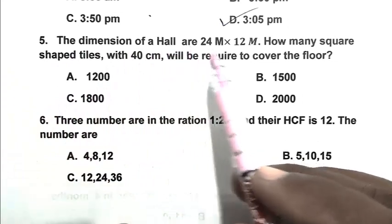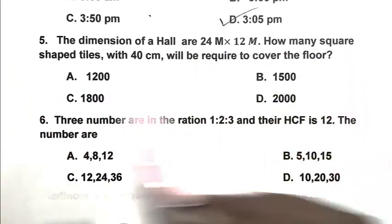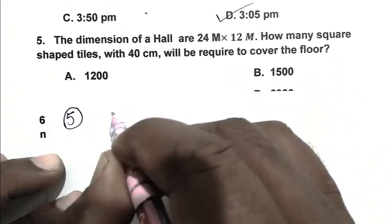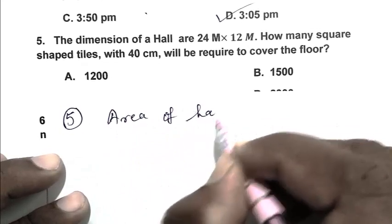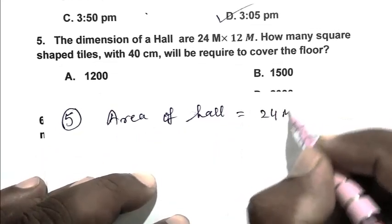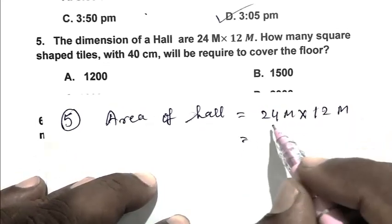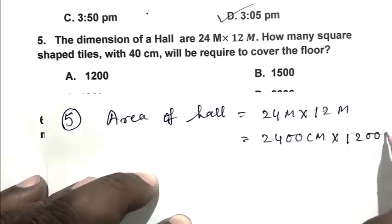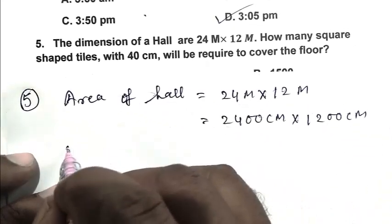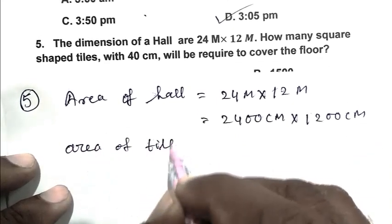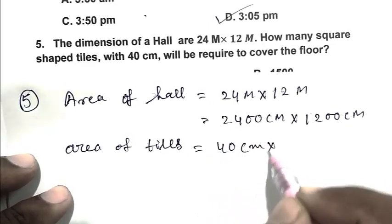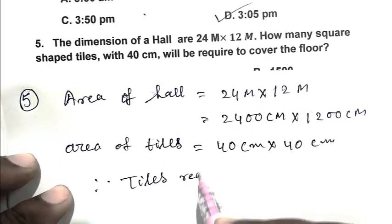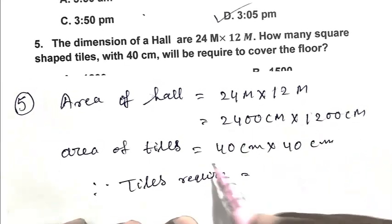Question number five: The dimensions of a hall are 24 meter by 12 meter. How many square shaped tiles with 40 centimeter will be required to cover the floor? So friend, area of hall is 24 meter by 12 meter. We can convert it into centimeter, so 2400 centimeter by 1200 centimeter. Area of tiles is 40 centimeter by 40 centimeter.